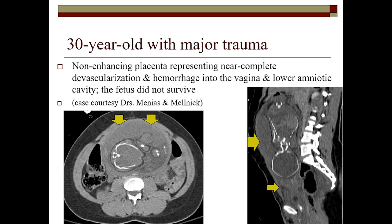Here is a case from colleagues Cookie Menius and Vinnie Melk at Washington University Mallinckrodt. This is a case where if you're not familiar with what the placenta should look like, you might not appreciate that the entire placenta is abnormal. It's uniformly devascularized. There's associated hemorrhage extending into the vagina and the lower amniotic cavity, and this fetus did not survive.